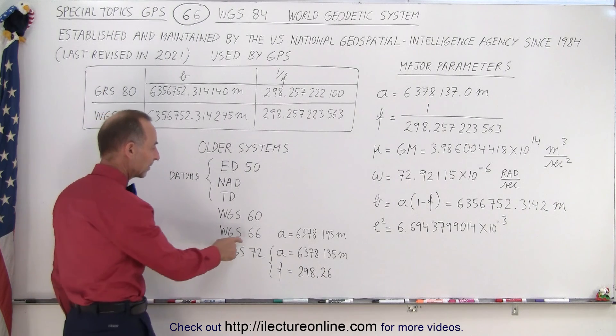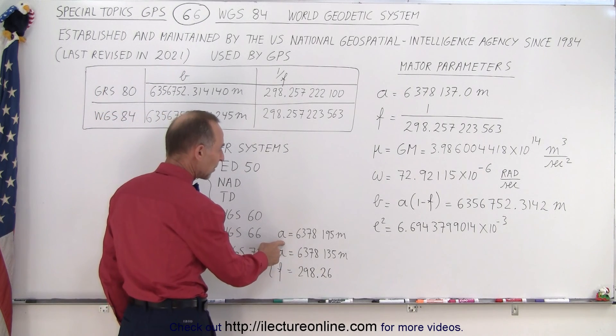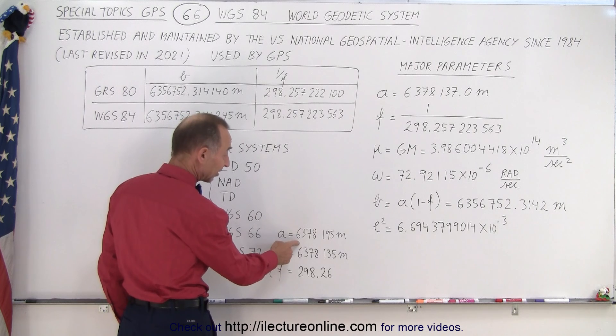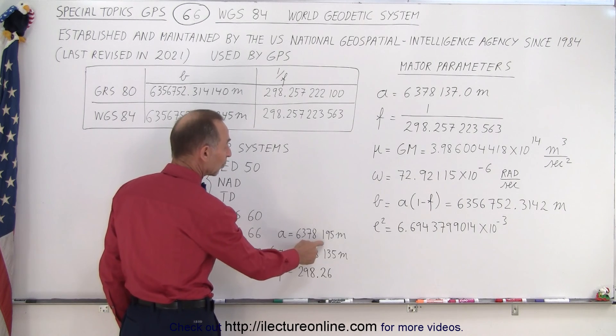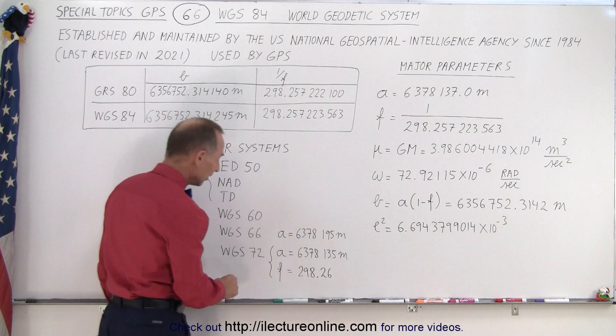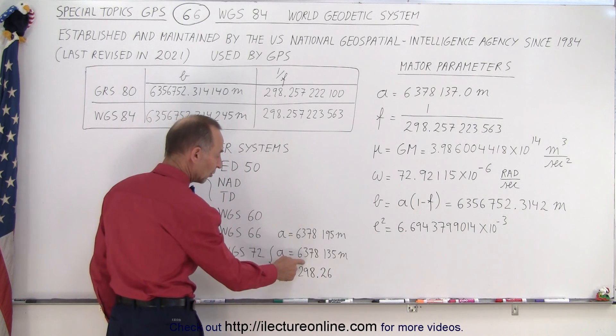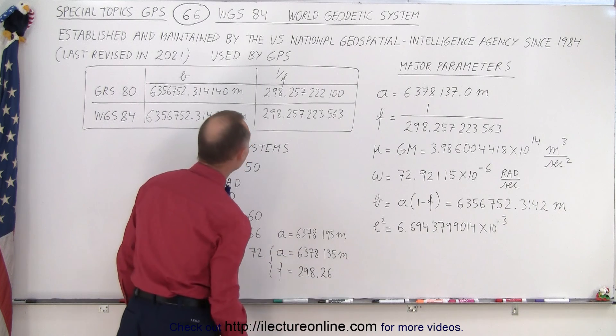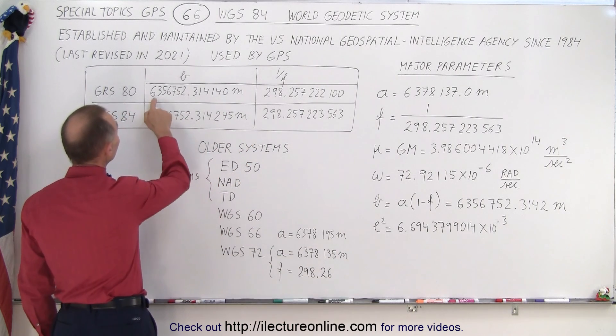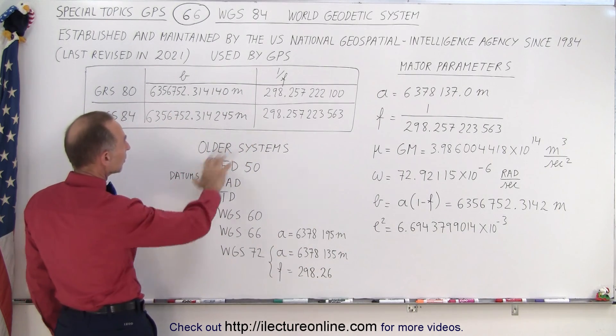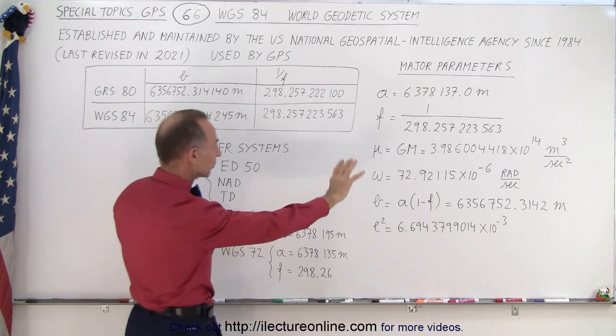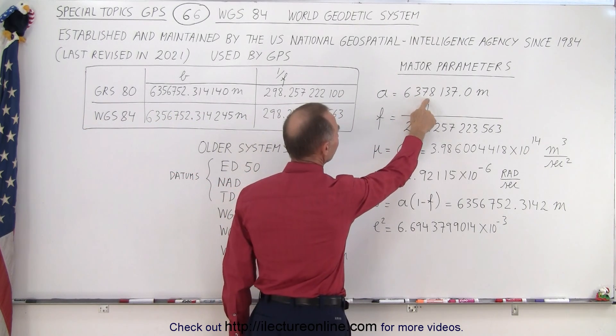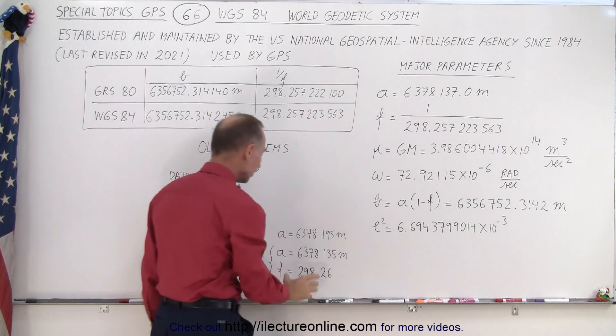So notice that in 1966 we had the semi-major axis established to be 6,378,195 meters. Six years later that was then reduced to 6,378,135 meters. And currently it is... oh wait, I don't have it right here. Where do I have it? Here we go. We have it at 6,378,137 meters.